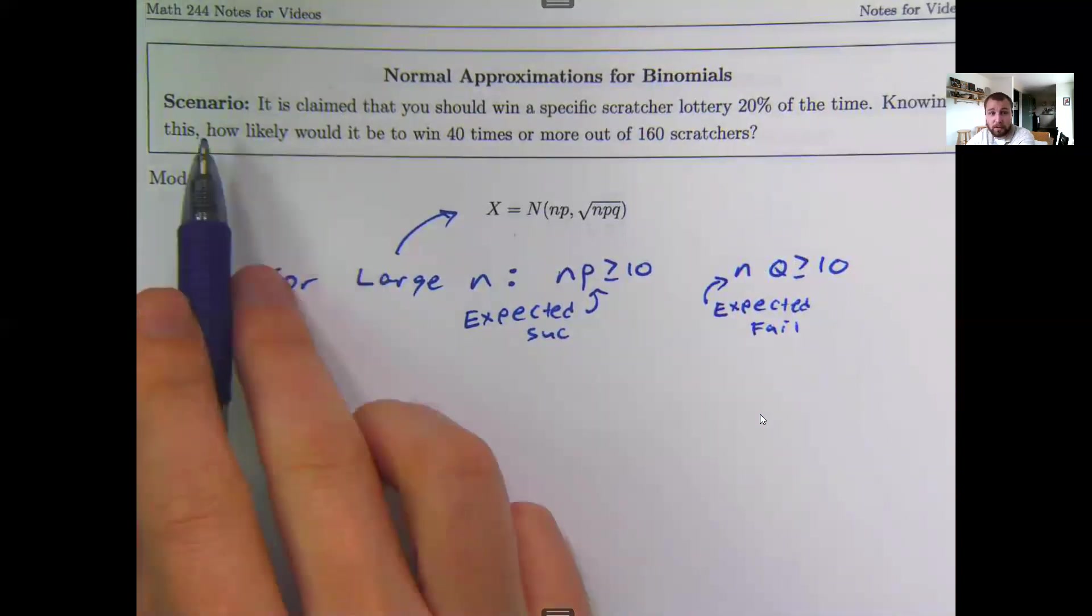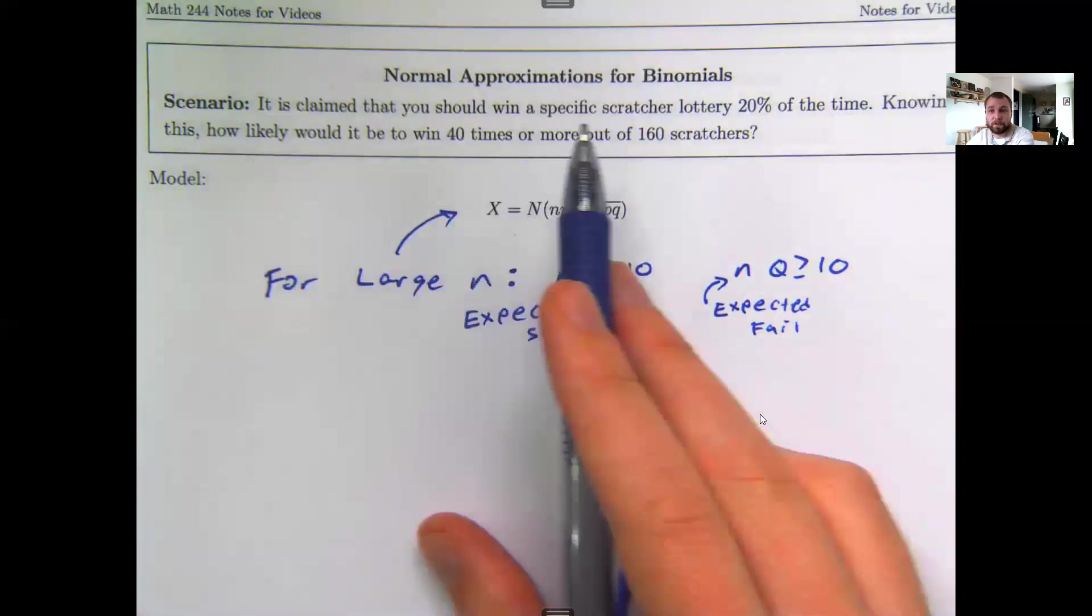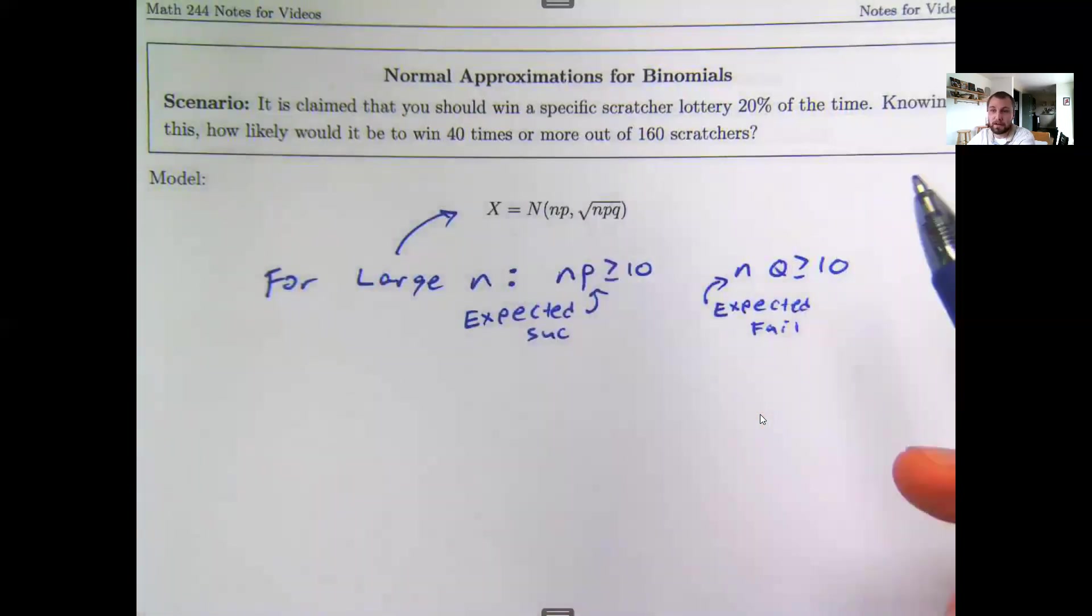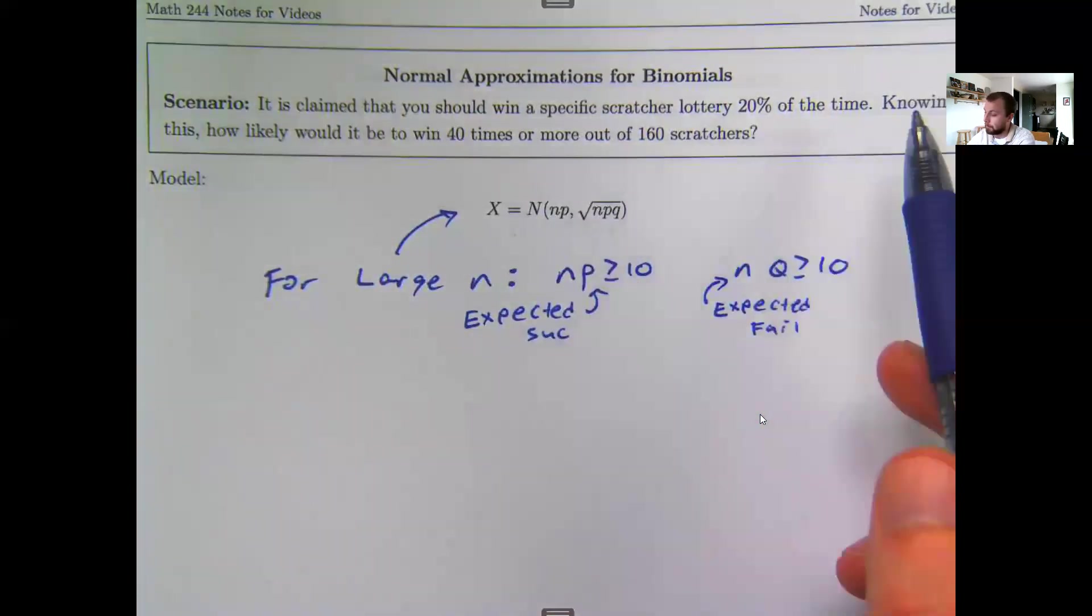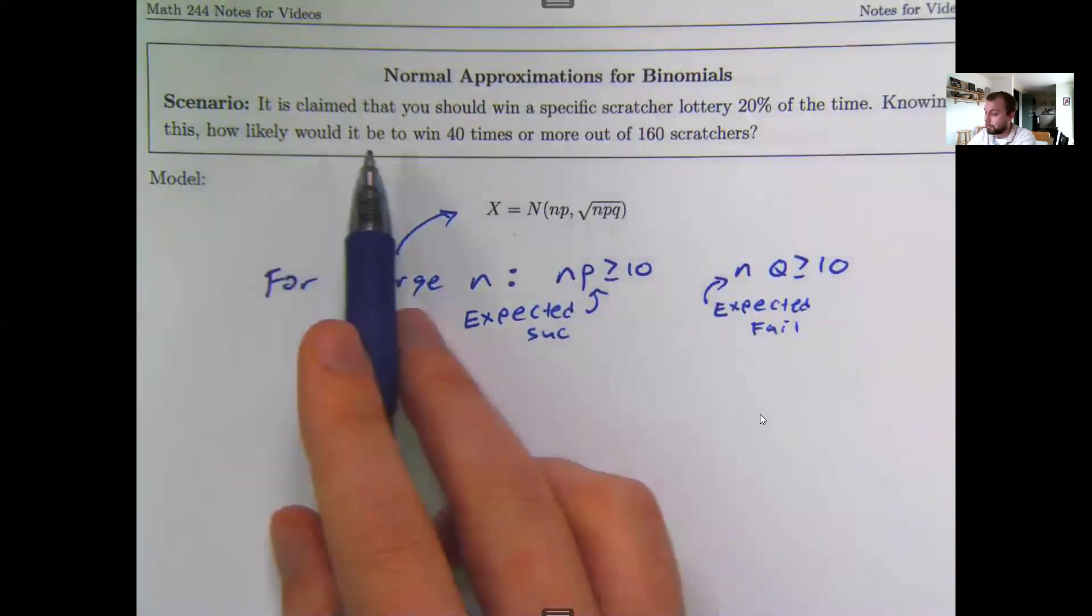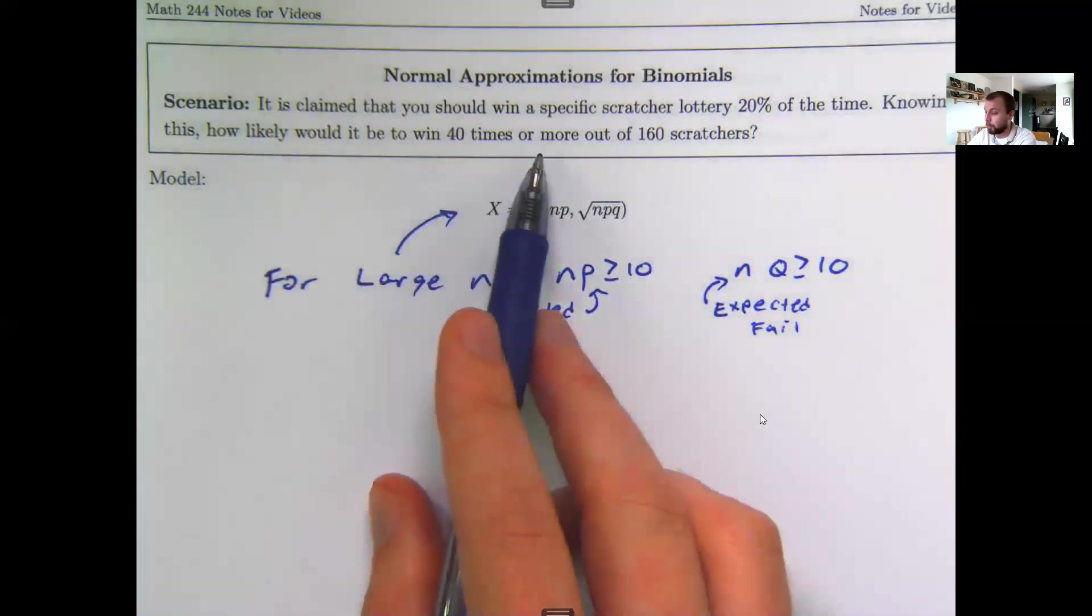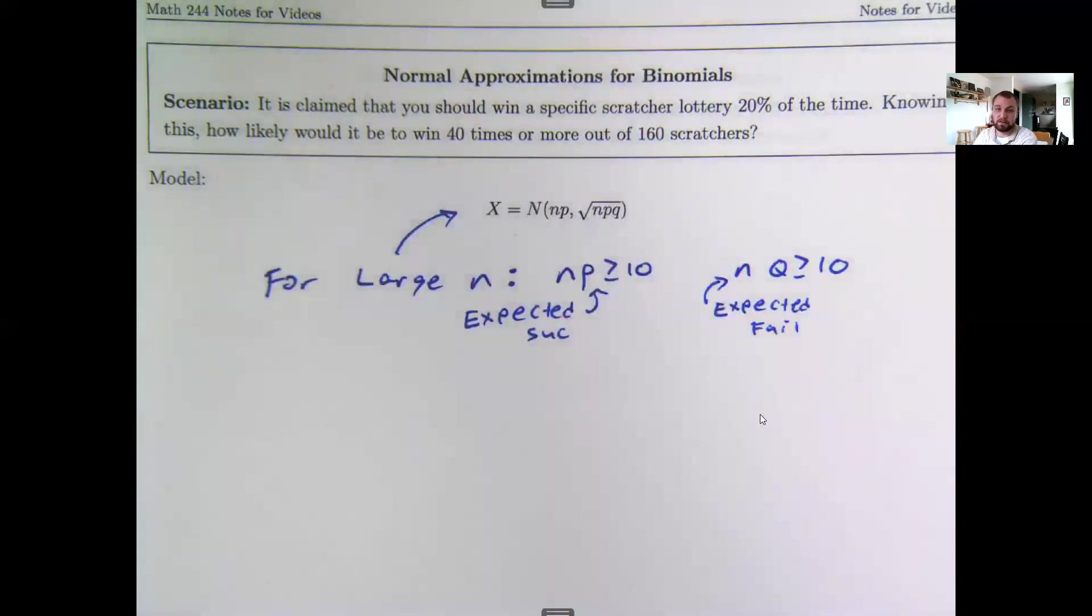So here's a scenario. It's claimed that you should win a specific scratcher lottery thing that they have 20% of the time. Knowing this, how likely would it be to win 40 times or more out of 160 scratchers?